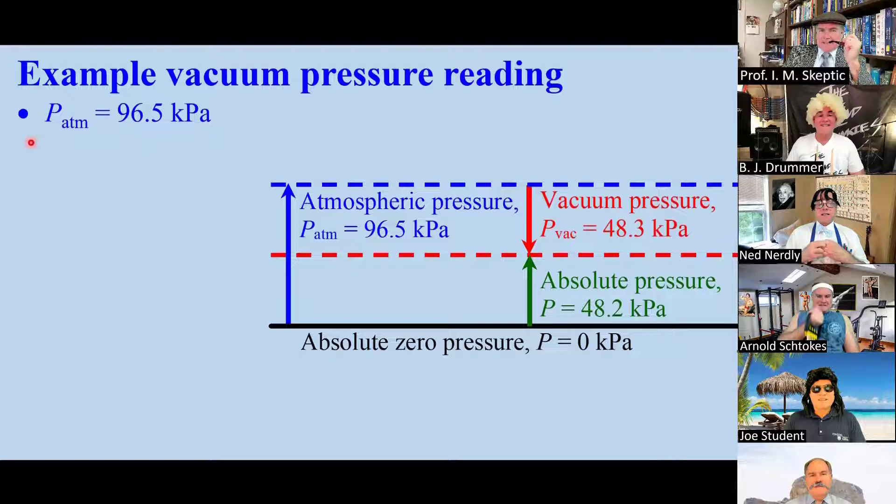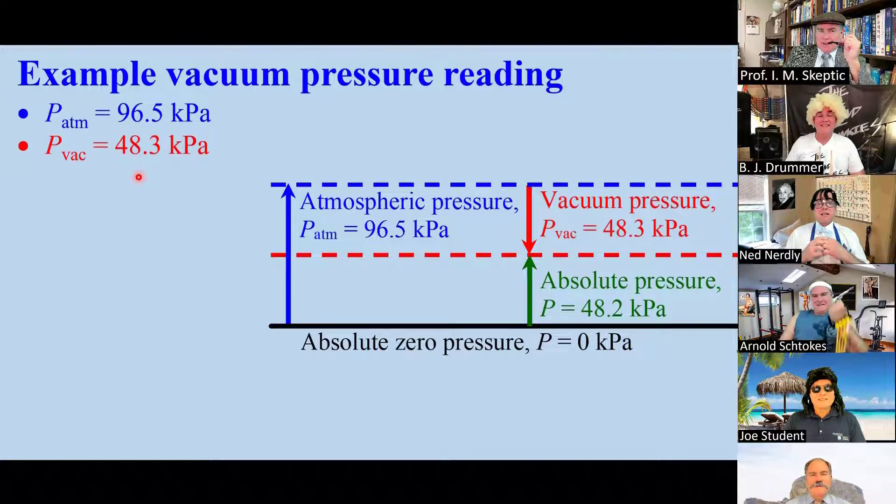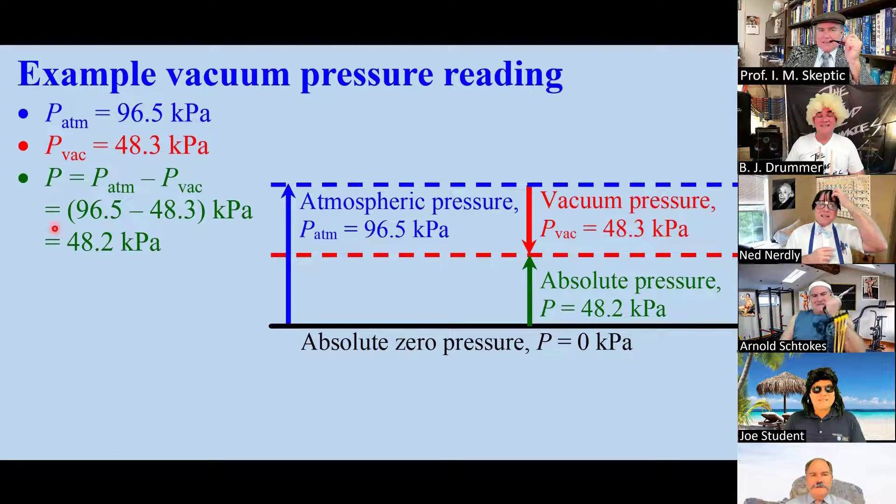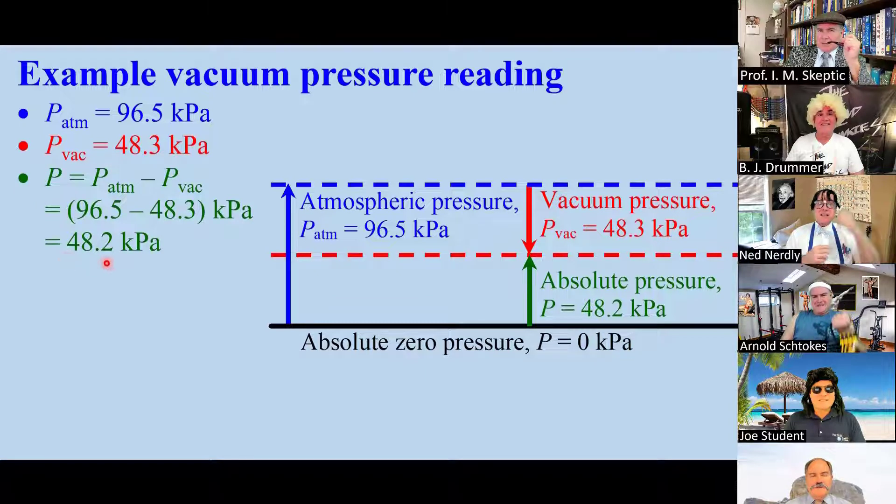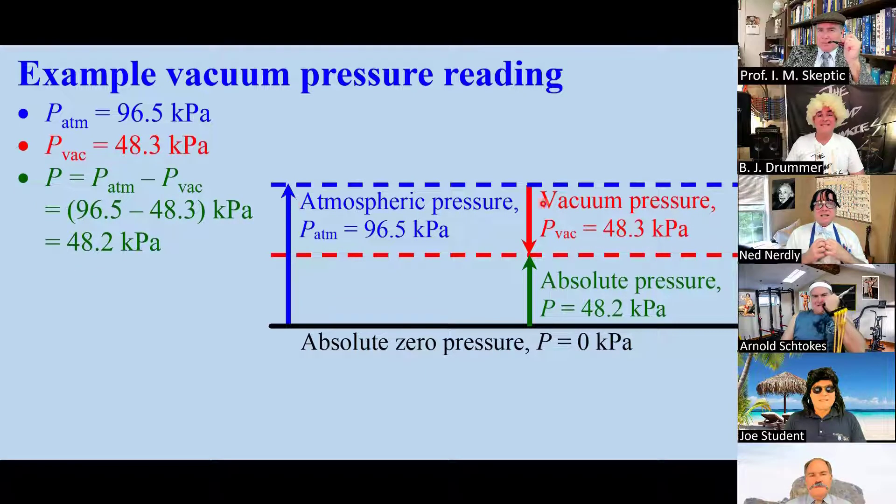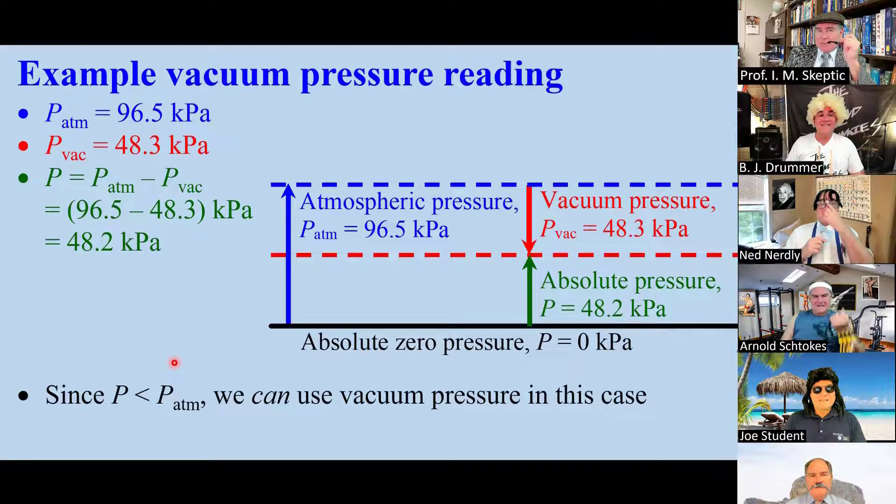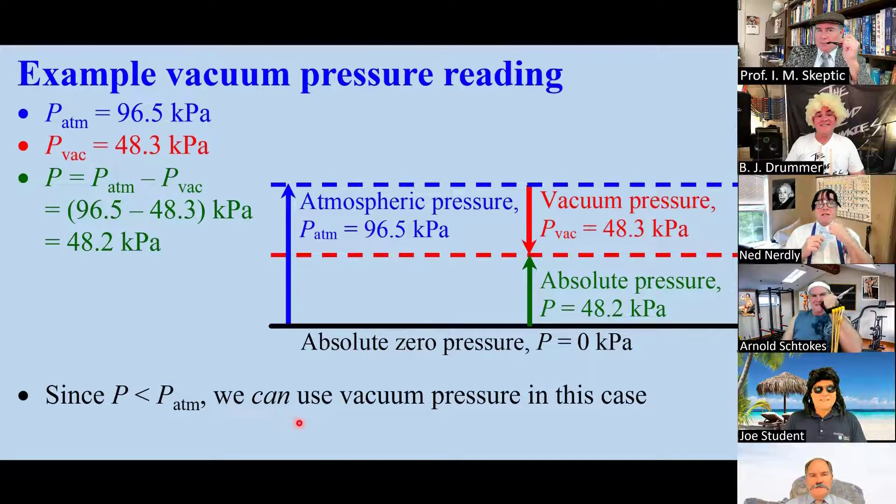Another example, at the same atmospheric pressure, suppose P-vac is 48.3 kPa. The absolute pressure is the difference now, which comes out to 48.2. Again, we have atmospheric pressure. We subtract vacuum pressure, and we get the absolute pressure. In this case, since P is less than P-atmosphere, we can use a vacuum pressure.